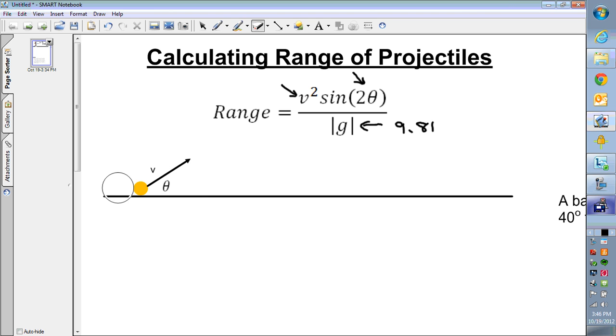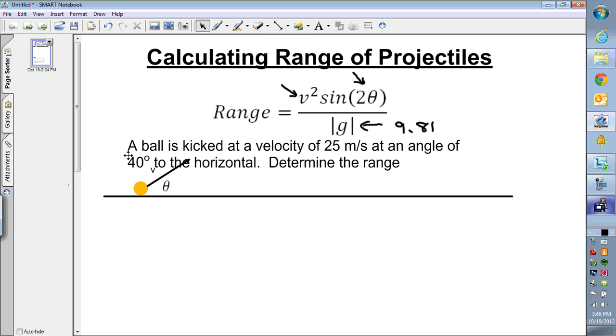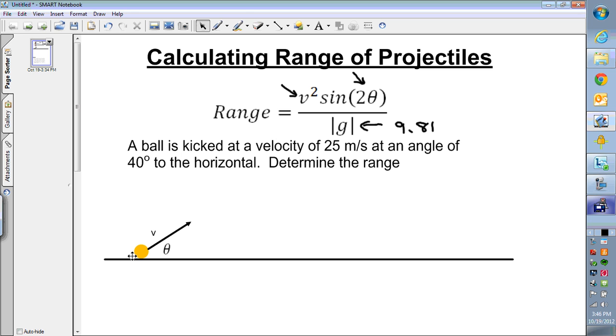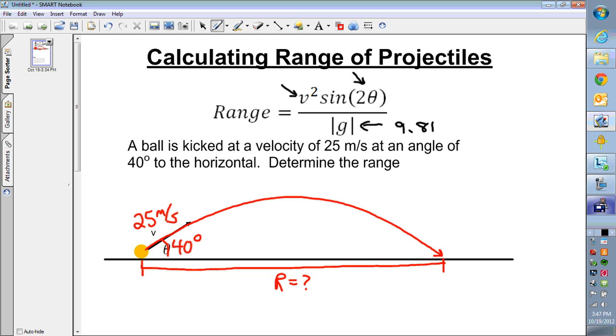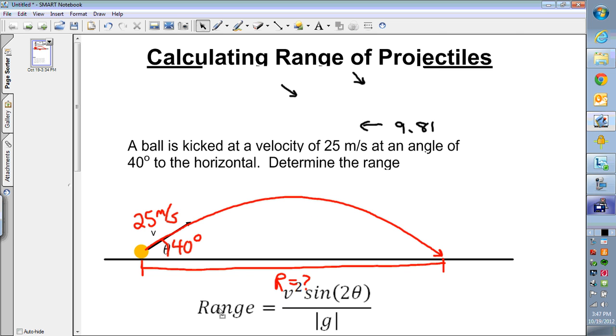Okay, so let's look at a couple of specific examples. One of them, a ball is kicked at a velocity of 25 meters per second, and the angle is 40 degrees to the horizontal, and it wants us to determine the range. So my v is 25 meters per second, the angle it makes to the horizontal is 40 degrees, and it wants to know when this path comes down and lands, how far away did it go? What is the range? So we'll call that a capital R. That's what we're searching for.